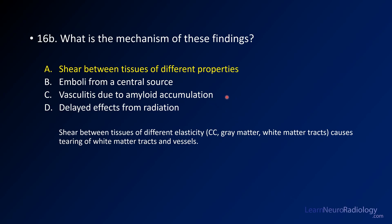Amyloid can cause susceptibility peripherally, but that's typically not what you're dealing with in this case. Radiation also can cause areas of susceptibility from microhemorrhages or cavernomas, but the distribution and history are not right in this case.